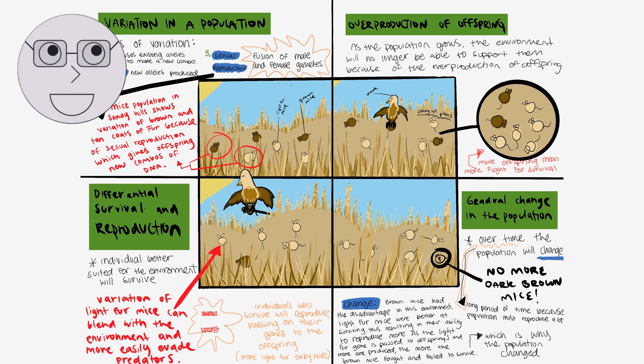Genetic diversity refers to the variety of genes within a species. It is essential for the survival and adaptation of species to changing environments. Genetic diversity allows for the development of new traits and characteristics that can help a species survive in different conditions. The visuals show examples such as different breeds of dogs or variations in the color of flowers.